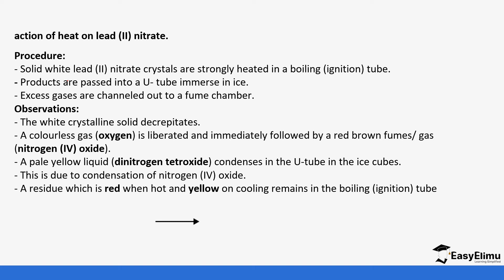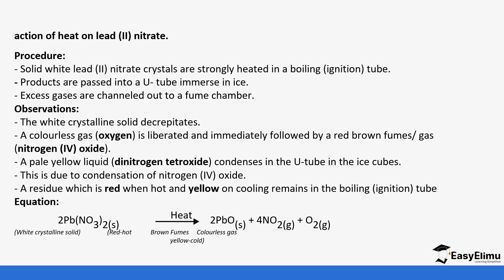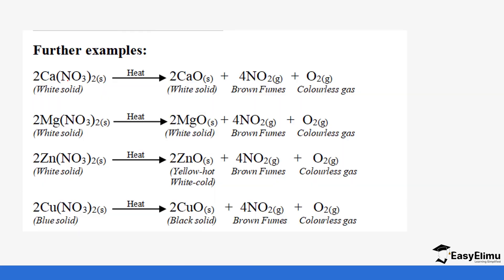A residue which is red when hot and yellow on cooling — that is lead oxide — is left in the ignition tube. So lead nitrate is heated to produce lead oxide, which is red when hot and yellow when cold, plus nitrogen dioxide (brown fumes), which condenses to form the yellow liquid nitrogen tetraoxide, and oxygen gas is also collected.